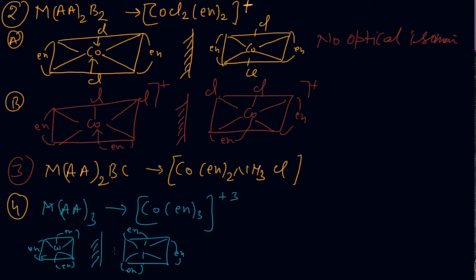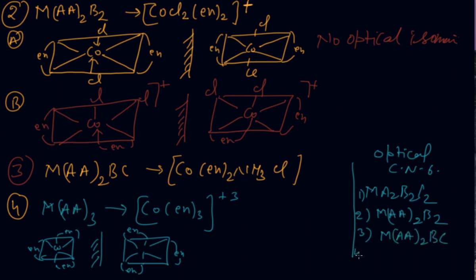So what is happening? Are you getting it? Mirror image is there. If you will arrange them in a peculiar way, you get the mirror image. For your convenience, you will write down what are the optical isomerism examples. Write down: optical isomerism with coordination number 6. Write the examples collectively: M(A)₂B₂C₂, second is M(AA)₂B₂, third is M(AA)₂BC, and fourth is M(AA)₃ which I have drawn here.